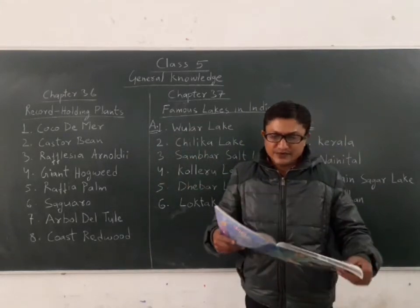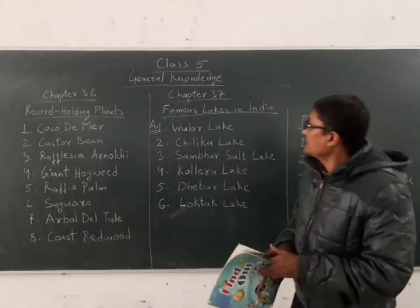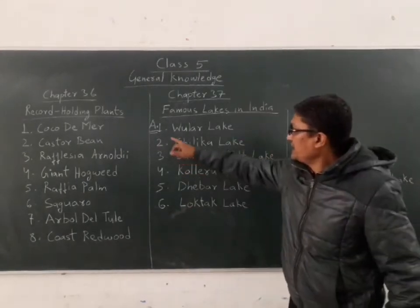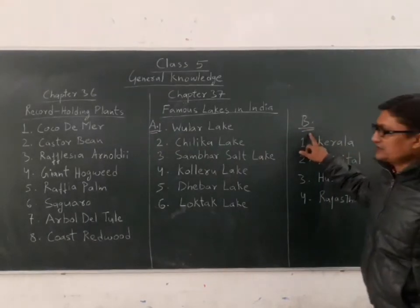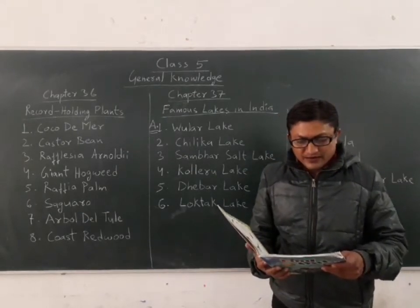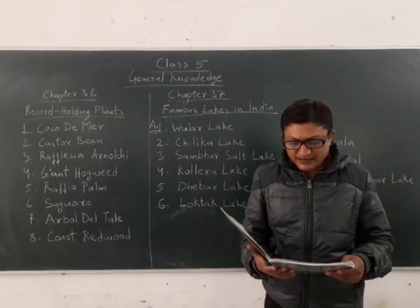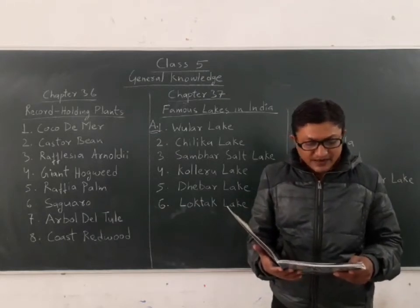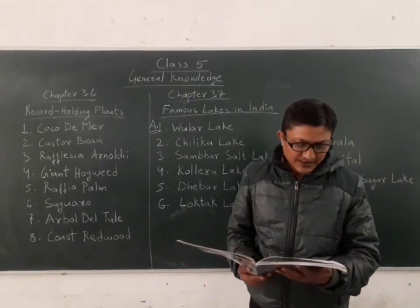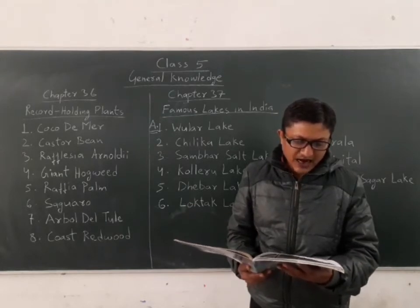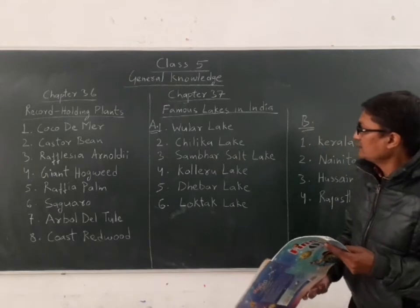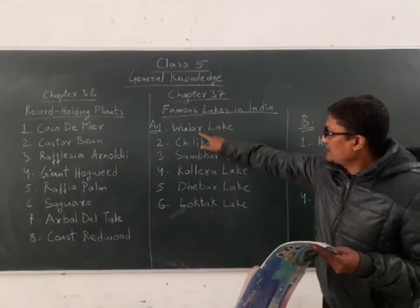Since Chapter 36 is completed, we now move to Chapter 37: Famous Lakes in India. In this chapter we have two sections, A and B. We start with Section A, where we are given the picture and description of some famous lakes in India and identify them. First description: it lies 32 km from Srinagar and is the largest lake in the Jammu and Kashmir region. The answer is Wular Lake.